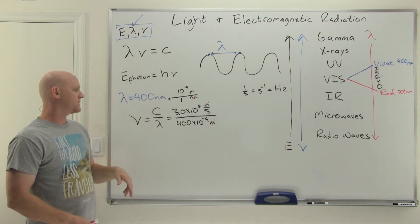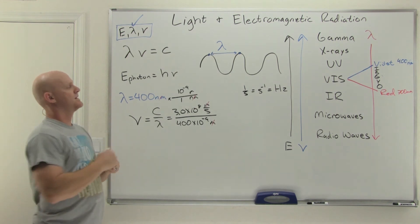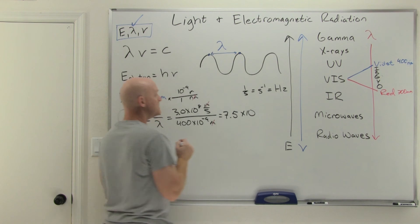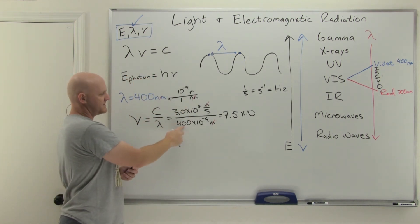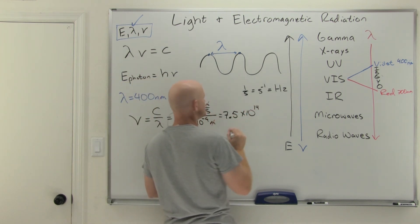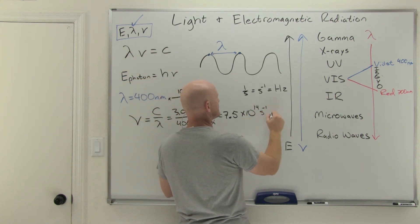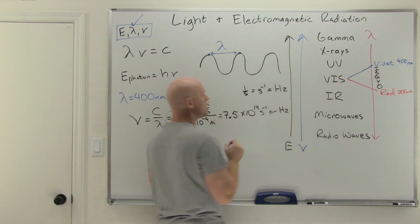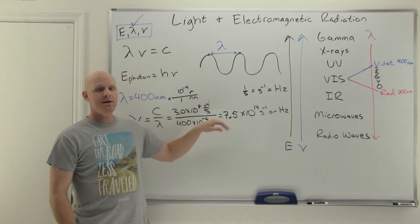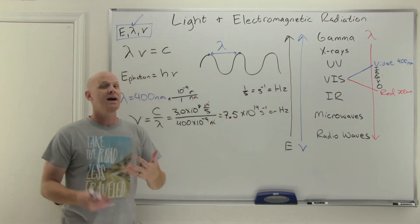Plugging into the calculator, notice three over four is 0.75, so the result is 7.5 times ten to some power. Factoring in the powers of ten, it comes out to 7.5 × 10¹⁴ s⁻¹ (or hertz). Any of the equivalent unit notations — 1/s, s⁻¹, or Hz — would be correct on a multiple choice question.